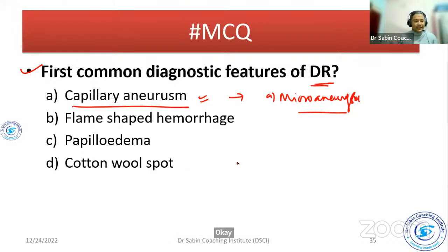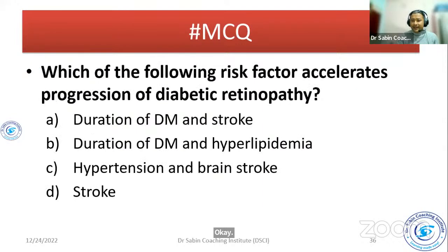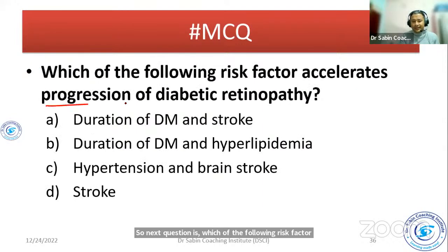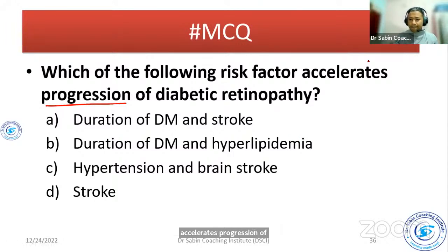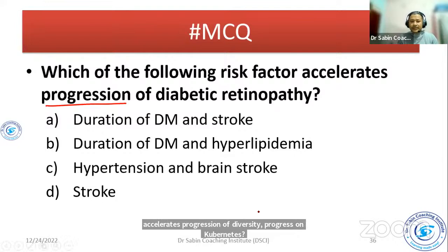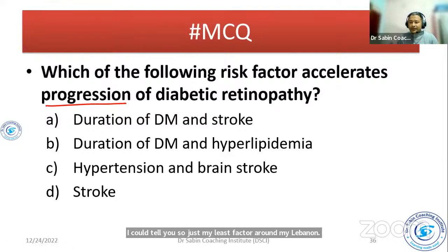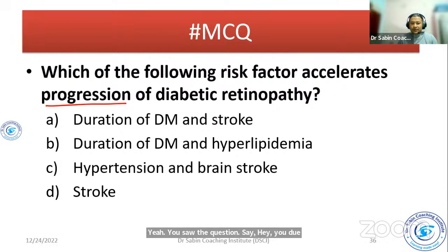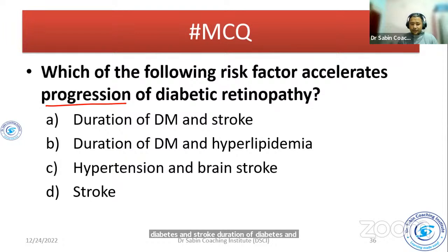Next question: which of the following risk factors accelerates the progression of diabetic retinopathy? The options include duration of diabetes, hyperlipidemia, hypertension, and brain stroke. The best answer is duration of diabetes and hypertension.